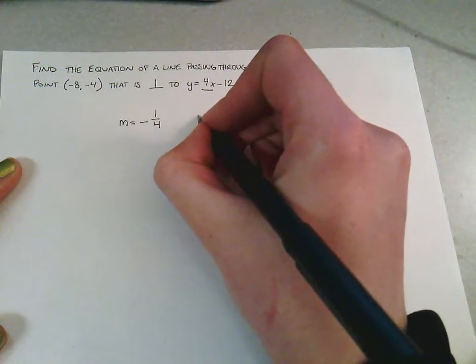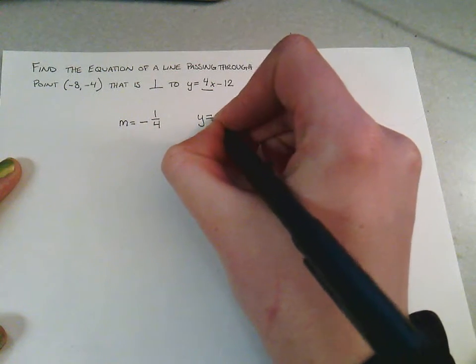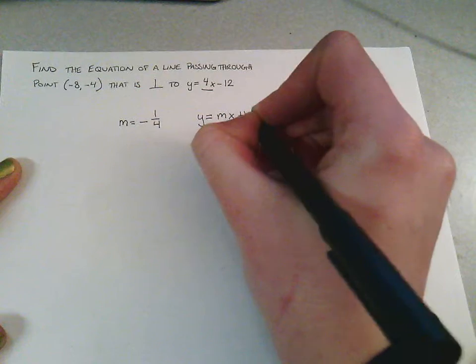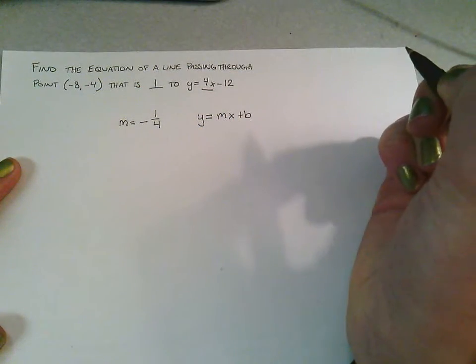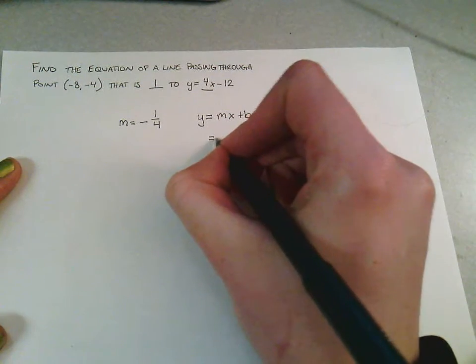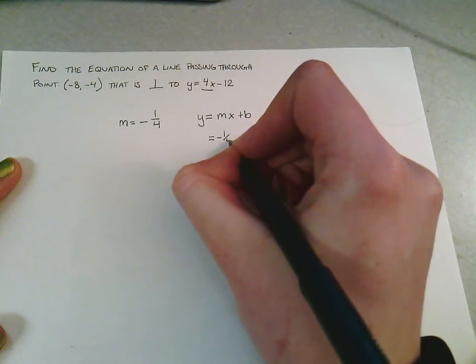Once we have that, we can write out our point-slope form of y = mx + b, or slope-intercept form. We now know m, so we can put in -1/4.